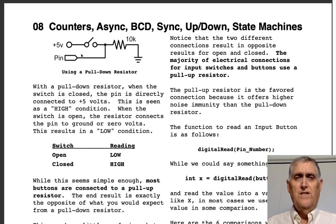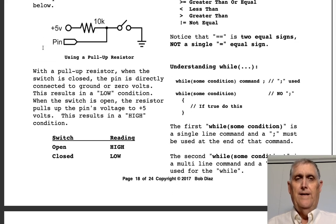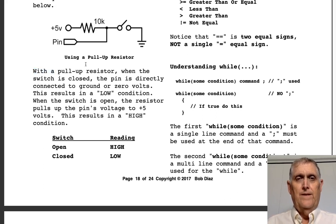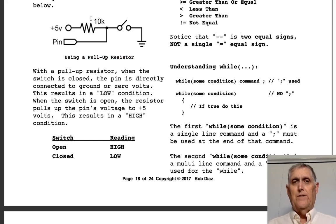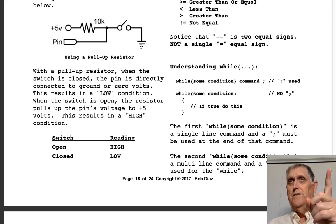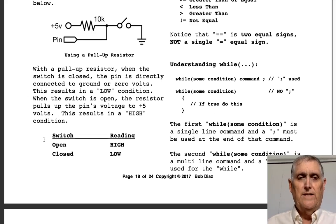With pull-up resistors, at plus five volts the chance of noise driving the pin toward ground is very low. With a pull-down at zero volts, it doesn't take as big a noise spike to incorrectly trigger a one. With a pull-up resistor you're in 'backwards land': switch open means the pin sees five volts — a one; switch closed means a clear path to ground — a zero. One is open, zero is closed — exactly the opposite of what you expected.